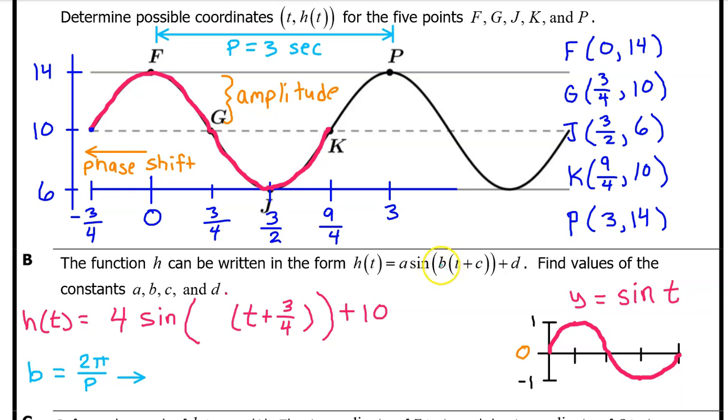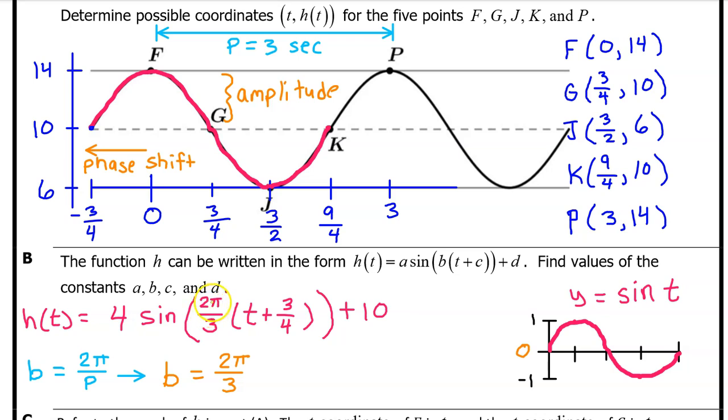Finally, to find the value of b, I need you to memorize this b value formula. b is equal to 2 pi divided by the period. The period is the duration of one full cycle. In this case, it takes three seconds for the merry-go-round to complete one full revolution. So that's the period. So the b value is going to equal 2 pi divided by 3. So let's fill in the 2 pi over 3 right here. And that's it. We have now found the value of a, b, c, and d.